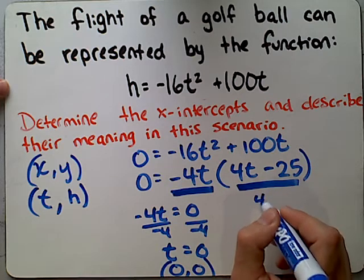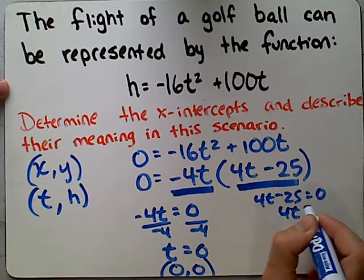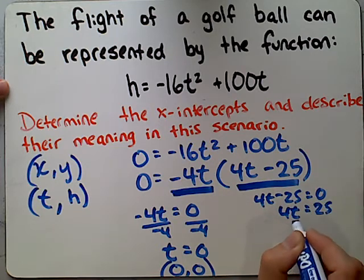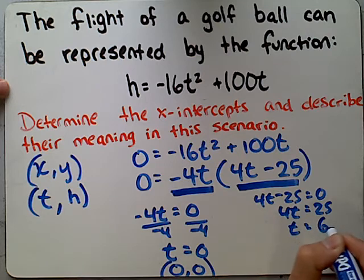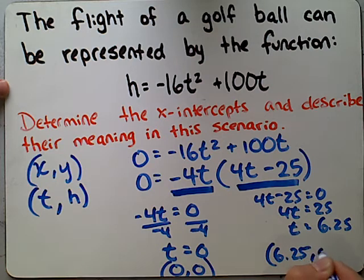Over here, we want to set 4t minus 25 equal to 0. You add the 25 to both sides. You get 4t equals 25. And you divide by 4. And you'll get 6.25, leaving you with an intercept of (6.25, 0).